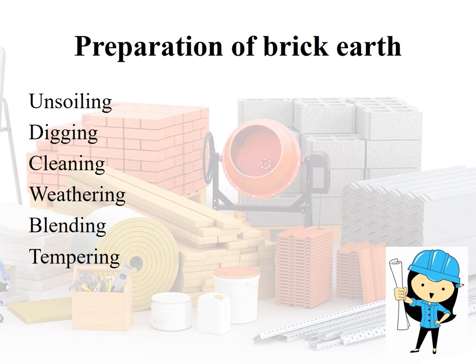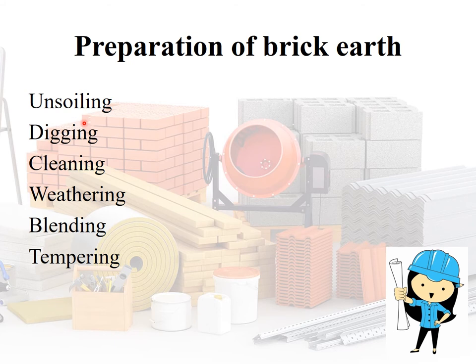The manufacture of bricks contains four stages: first is preparation of clay or brick earth, second is molding, third is drying, and fourth is burning. The first process — preparation of brick earth — contains six steps. Step one: select and unsoil the site, removing impurities and organic matter from the topsoil up to a depth of 20 cm. Step two: digging and leveling. Step three: cleaning — freeing the clay from stones, pebbles, and vegetable matter, and reducing clay lumps to powder form.